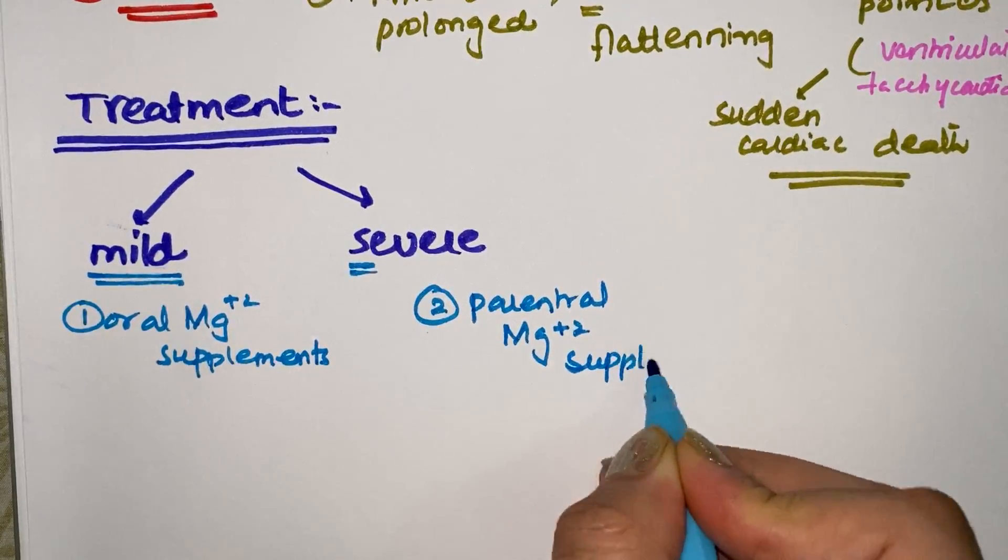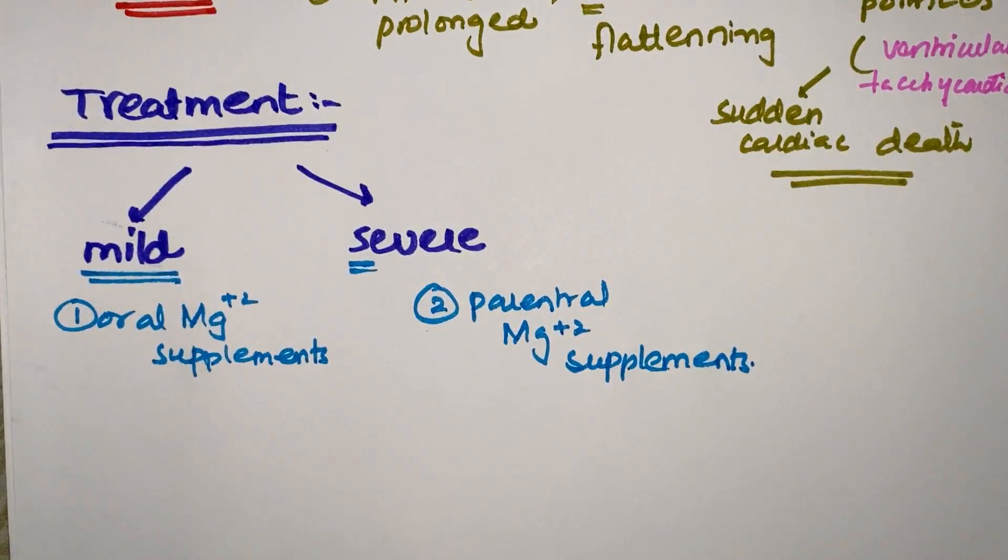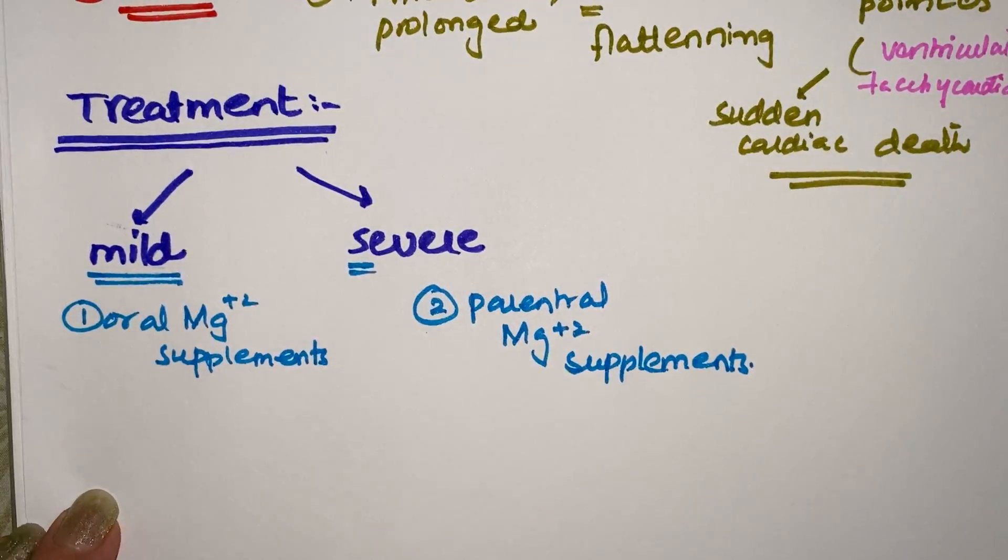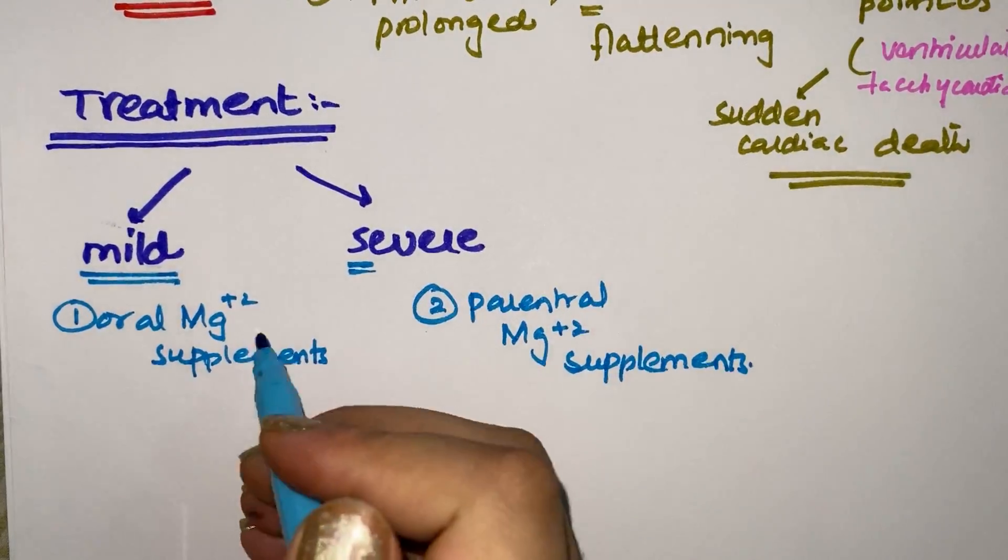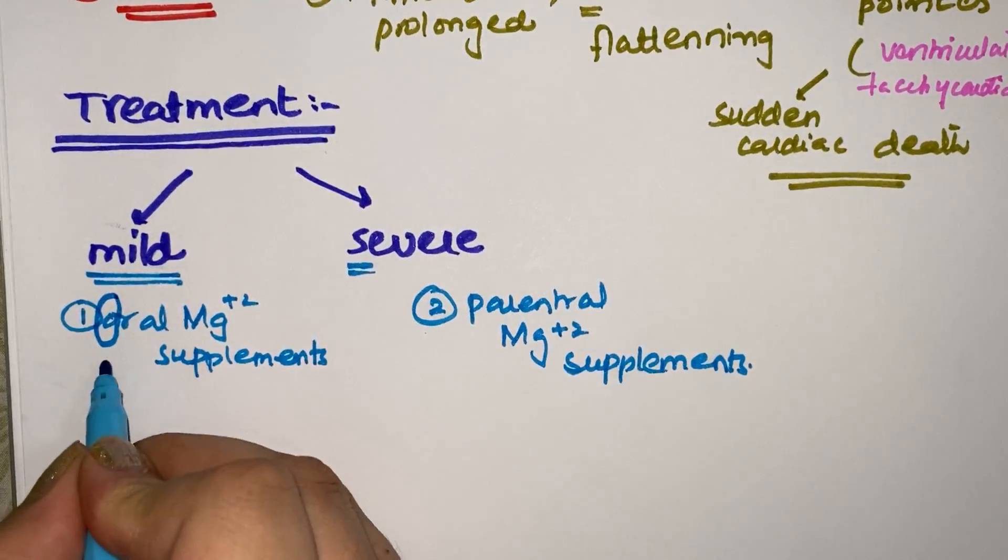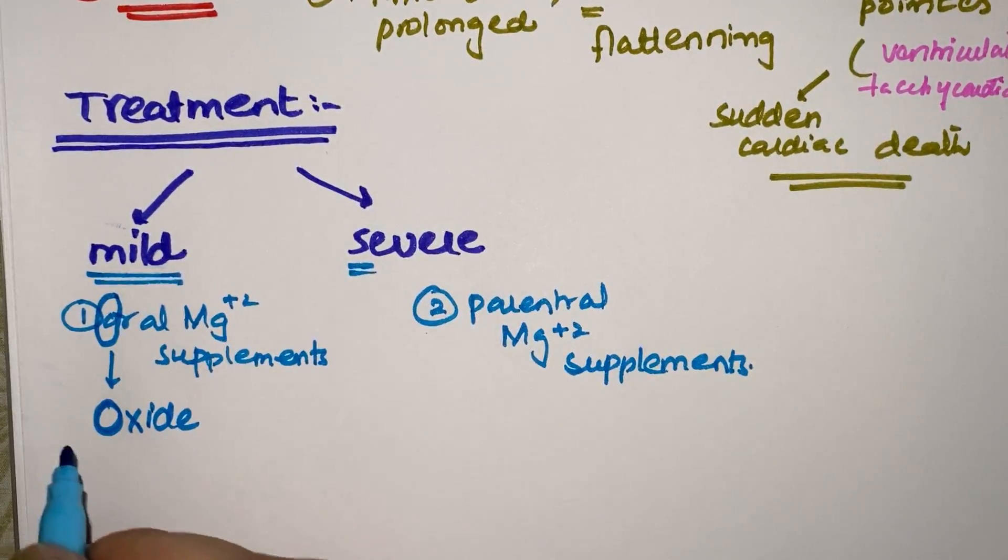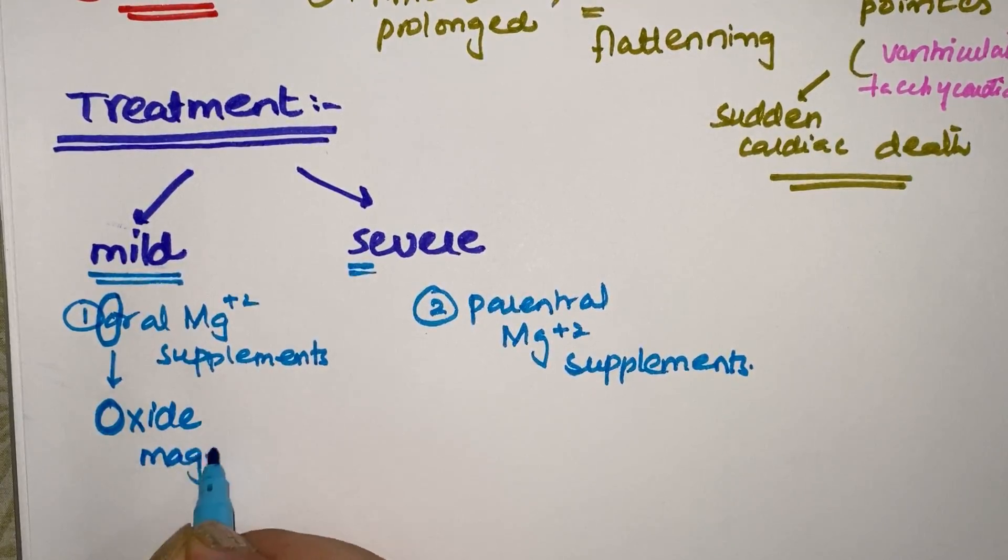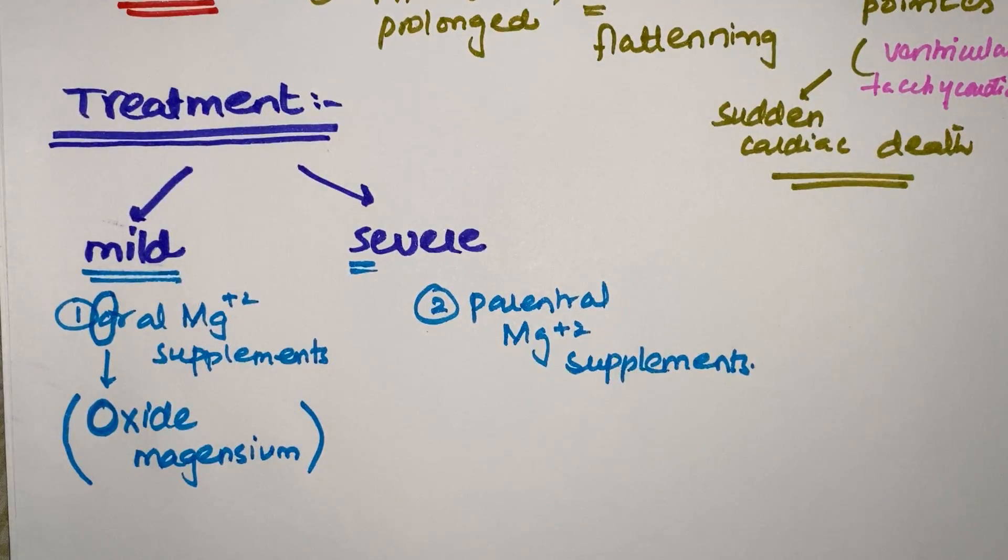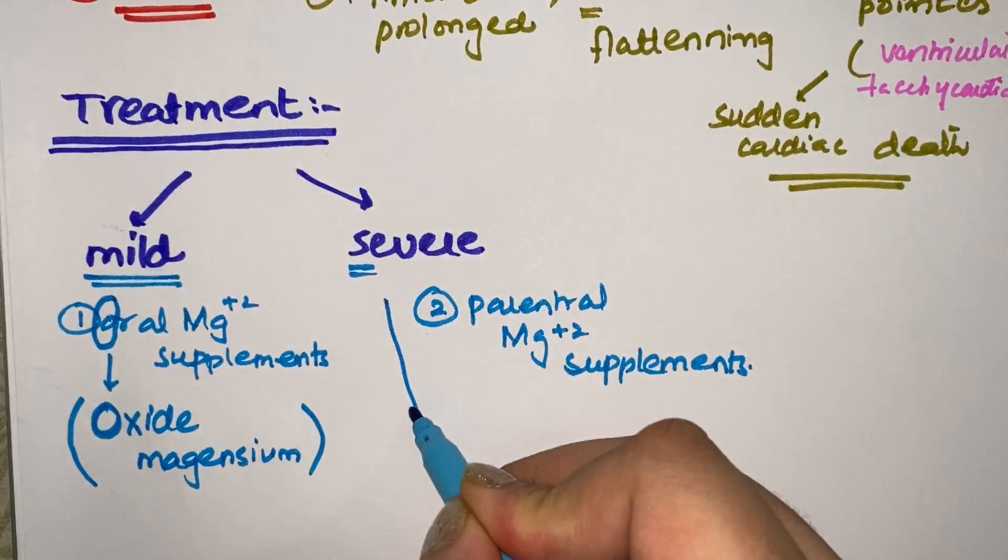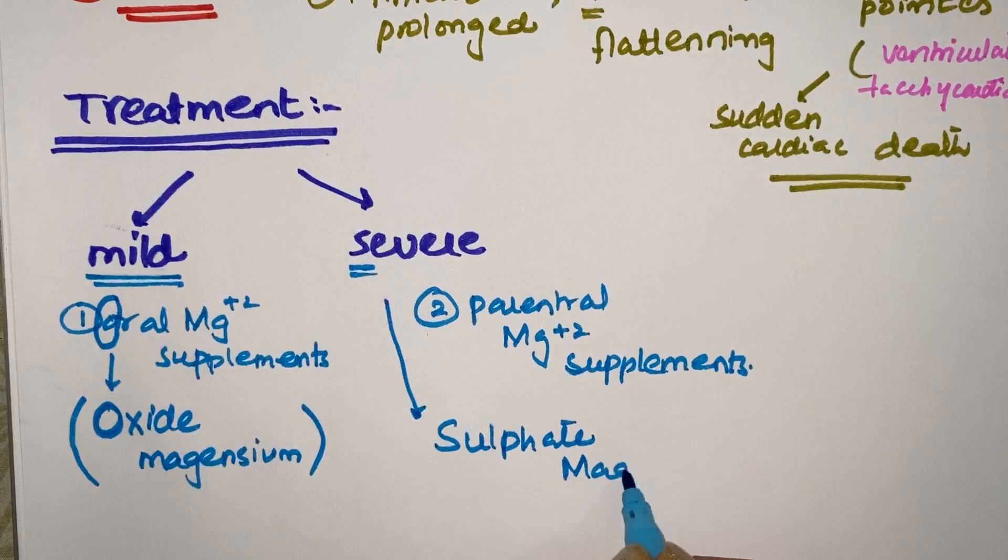Now the question is what type of magnesium supplement will we give. I'll help you memorize this for long-term memory. For oral, take this O from oral, we'll give magnesium oxide. So it's a mnemonic to remember. We give magnesium oxide to patients if they're having mild hypomagnesemia. To remember severe state, take this S as mnemonic, we give magnesium sulfate to the patient.